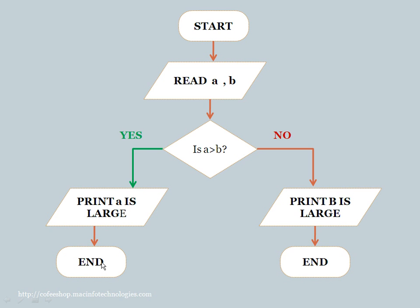After that we say end the program. So if the value a is greater than b, the program starts from here, goes through the decision, and the control goes this way — it will never go the other way. It takes this path and prints a. So if a is not greater than b, then it takes the other path, prints b, and ends the program. This is how we pictorially represent a C program.